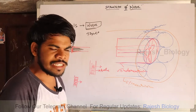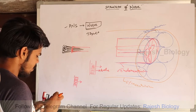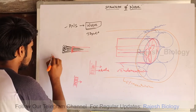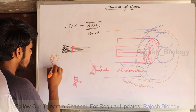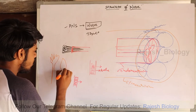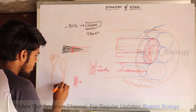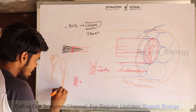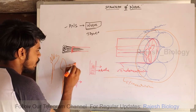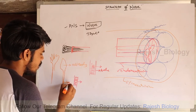I will draw a clear diagram after completing this explanation. As an example, let's take a lotus flower to understand the nerve structure. The bud is like a cell body and the stalk is like an axon, so it represents the neuron.